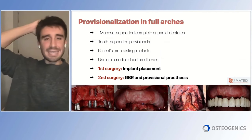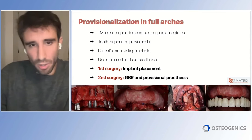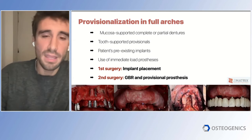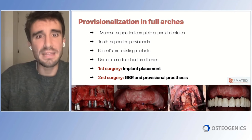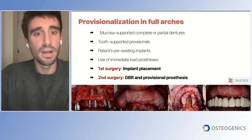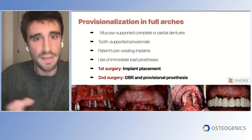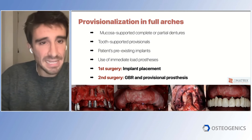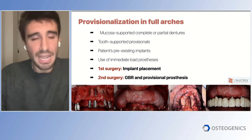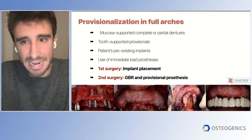One last approach for cases where there's nothing pre-existing and not enough bone for immediate loading: a staged approach — placing implants in a first surgery, and when the implants are osseointegrated, uncovering them and performing GBR with osseointegrated implants. We see a patient with an awful periodontal situation — periodontal defects to the apex on most remaining teeth, and a CBCT showing a very, very thin maxilla. We extract everything and place implants at the same time, burying the implants.